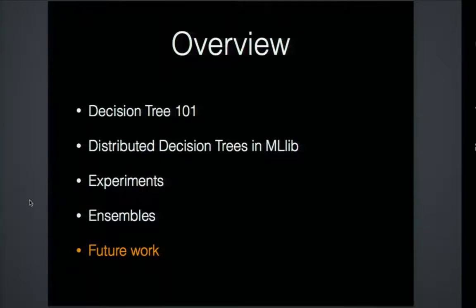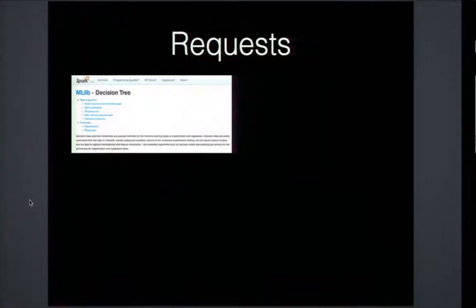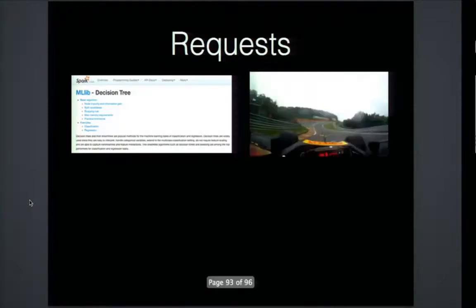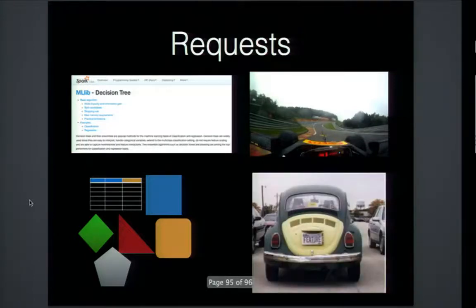For future work, ensemble implementations are a stretch goal for Spark 1.1. We would also love to have feature importances for all tree algorithms, and decision tree visualizations would be a cool feature. We are also testing over a wide variety of user data sets. We invite the community to try the MLlib decision tree documentation — officially part of Spark 1.0 — test drive it on your own data sets, send us data sets of any shape or size, and report any feature requests or bugs.